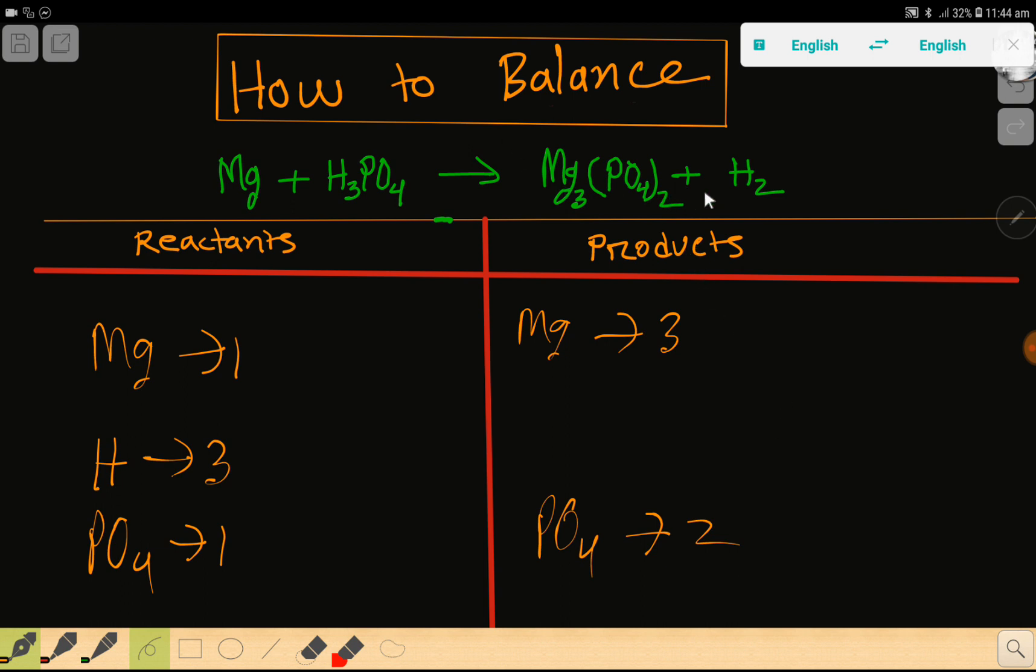Then we have hydrogen which is two. To balance this reaction means we have to balance the number of magnesium, hydrogen, and phosphate from both sides of this reaction.